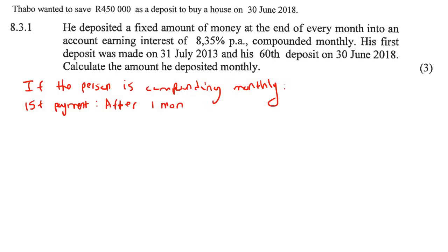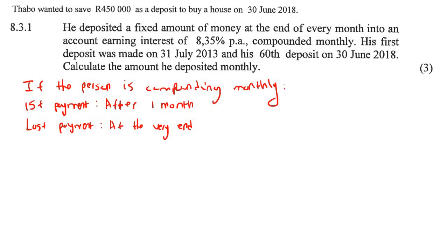The first payment must always be made after one month, and the last payment should always be made right at the very end. So this person opens their account on 30 June. The first payment should be done one month from then — that's 31 July, because June has 30 days and July has 31. So this person has taken a whole month. He would have opened the account on 30 June 2013, and makes his first payment on the 31st of July, which is exactly one month later. This is the perfect scenario.